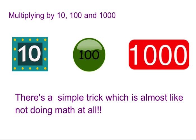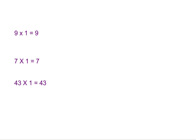This is Lauren and the title of this lesson is multiplying whole numbers by 10, 100 and 1000. This is a great lesson because it's almost like doing no math at all. You guys know that 9 times 1 is 9, 7 times 1 is 7, and 43 times 1 is 43. Anytime you multiply a number by 1, it's the original number.